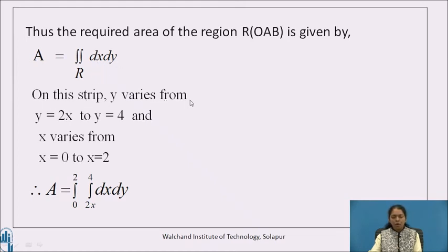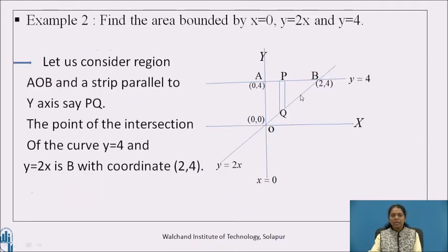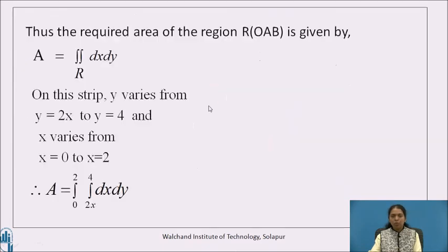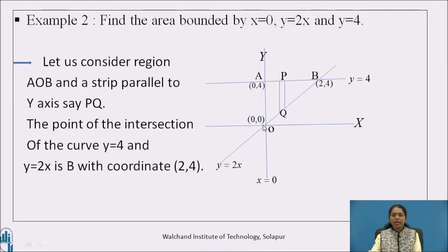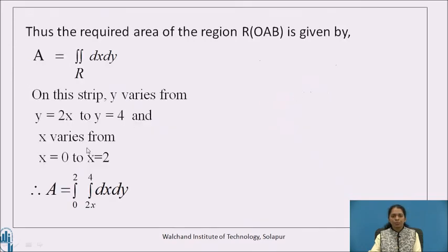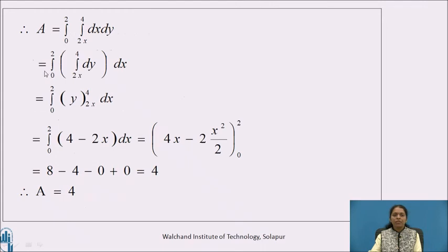On the strip parallel to the y-axis, the limits are: at the bottom y = 2x and at the top y = 4. The constant limits for x are from x = 0 on the left to x = 2 on the right. Hence area A = ∫(0 to 2) ∫(2x to 4) dy dx, which equals ∫(0 to 2) [∫(2x to 4) dy] dx.